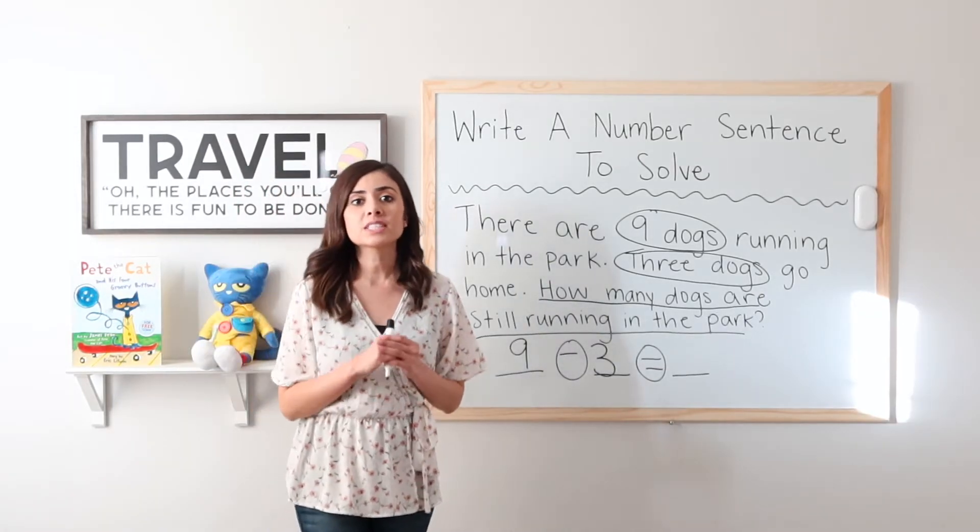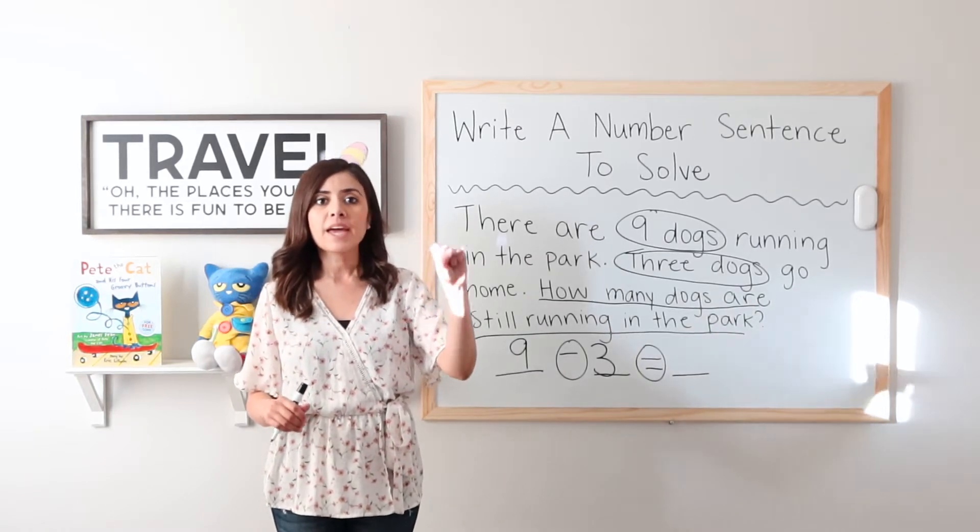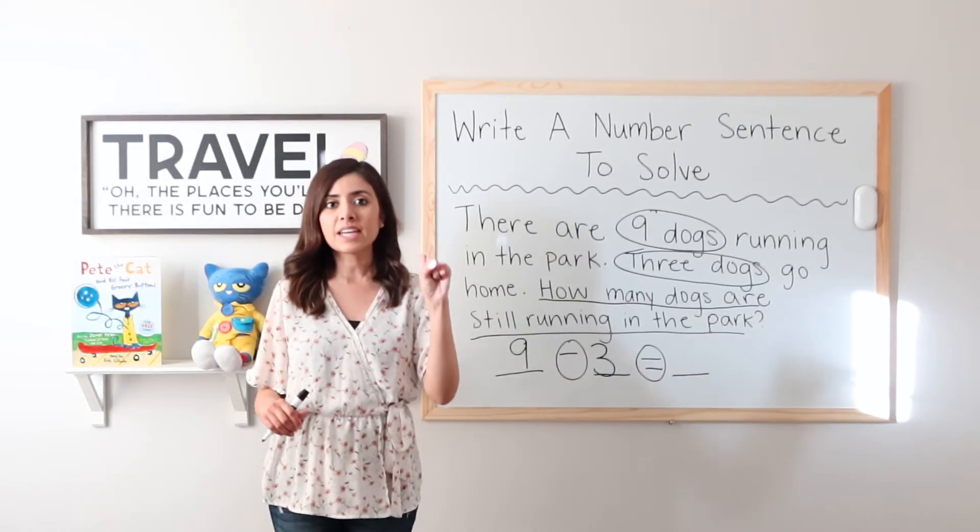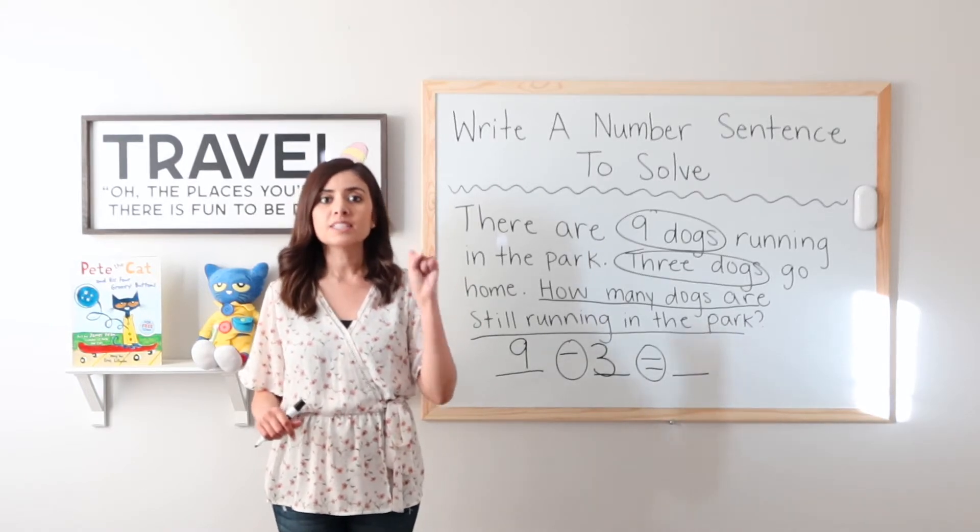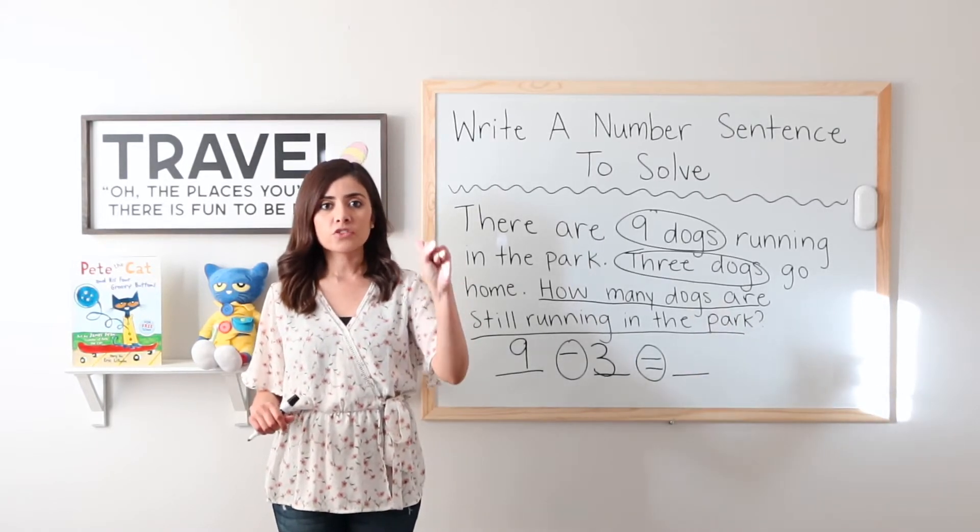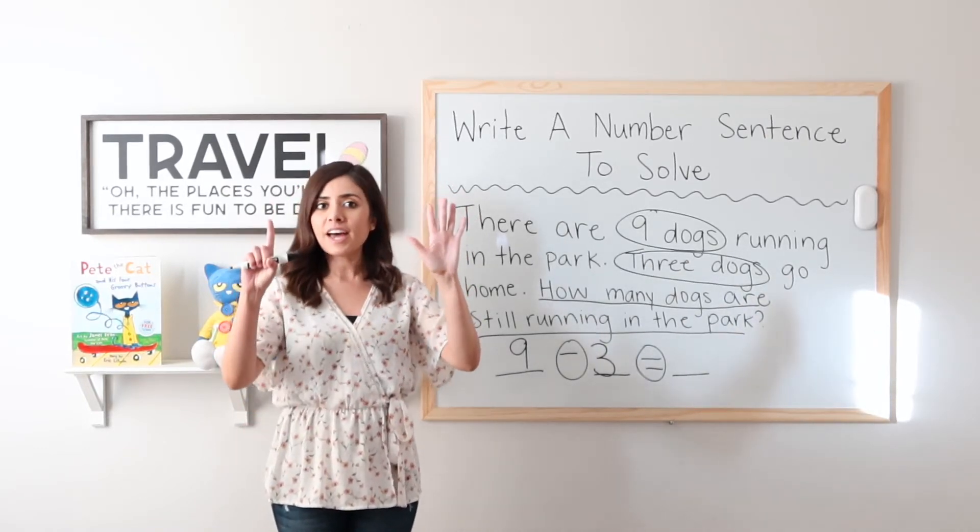What is nine minus three? So in order to figure this out, I'm going to go ahead and hold a fist and say three and jump up until I get to nine. Then I will see how many fingers it took to get from three to nine. Ready? Three, four, five, six, seven, eight, nine.